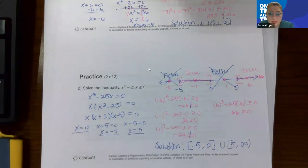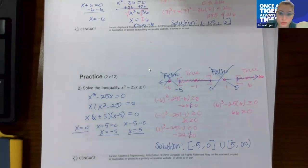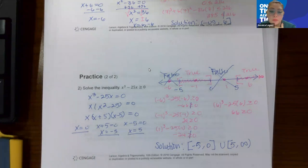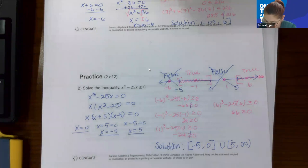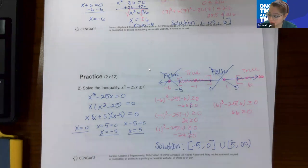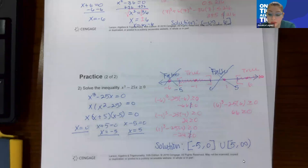You really cannot know which sections are going to work unless you find the key numbers and test each interval by plugging test numbers into the original inequality and determining whether you get something true or false. Only the sections that tested true are going to be part of your solution. That's it for this section — it's not a long one, but there are plenty of problems for you to practice in the WebAssign.